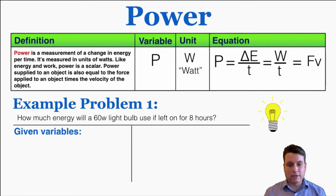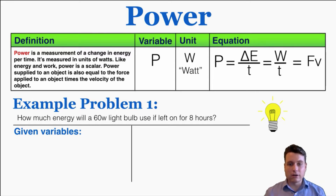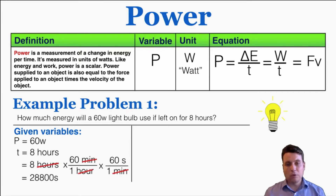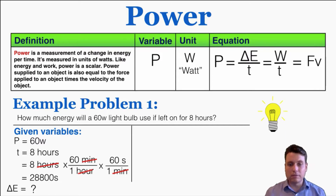Here's an example problem with this idea of power: how much energy will a 60 watt light bulb use if left on for eight hours? I'm going to start by writing down my given variables. I know that the power is 60 watts, and the time is eight hours. Because the standard unit of time in physics is seconds, not hours, I need to convert that, and I find that this is 28,800 seconds.